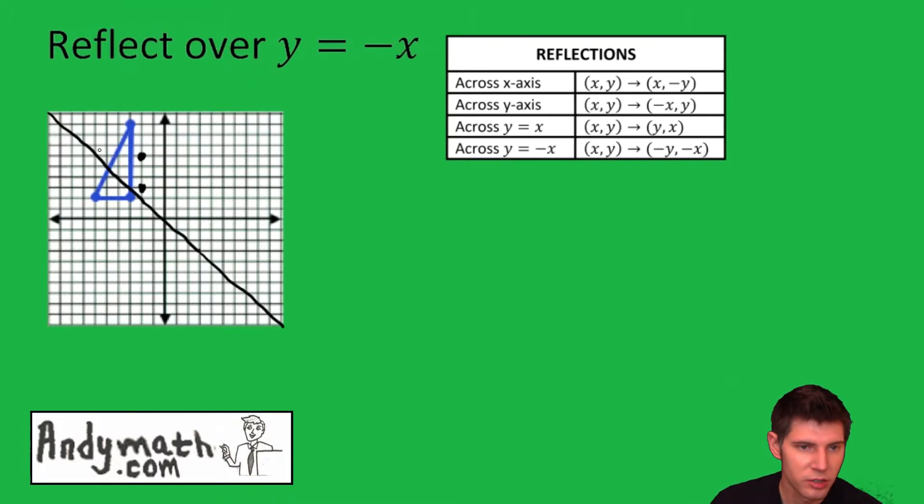So this right here is one, two, three diagonals, so we're going to go one, two, three more diagonals. That puts us right there.